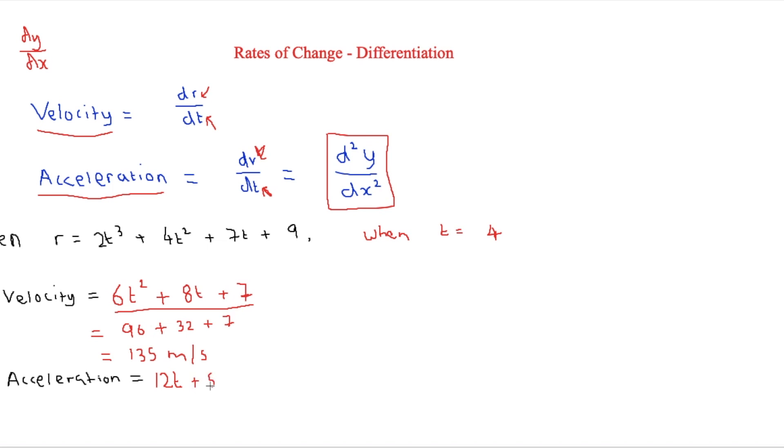And that will get us 12t plus 8. And again, if we wanted to say that t is equal to 4 and use this again, then we just have to substitute 4 in to get 48 plus 8, that's equal to 56.